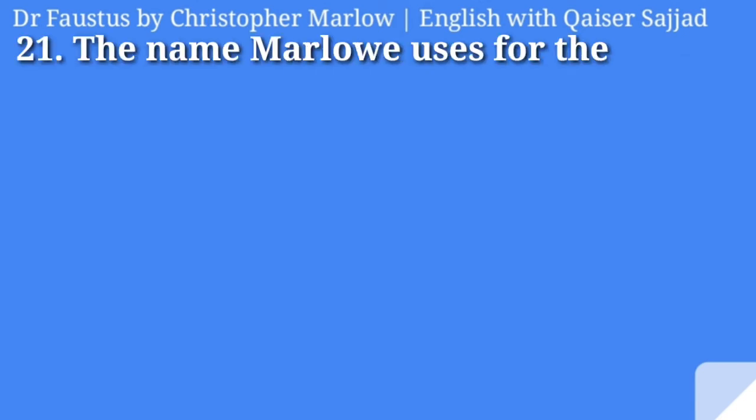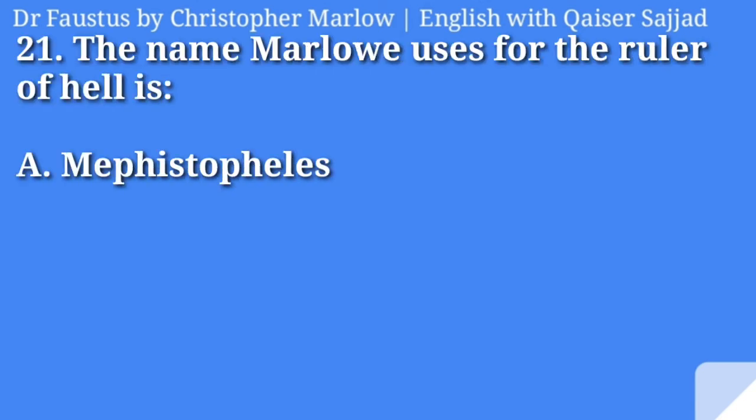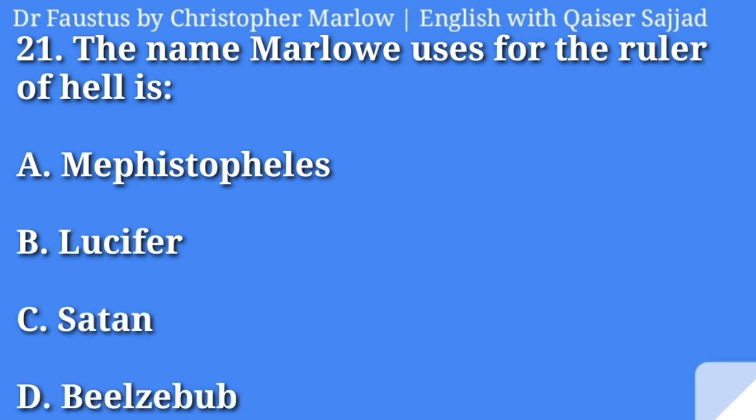The name Marlowe uses for the ruler of hell is: Mephistopheles, Lucifer, Saturn, or Beelzebub? Answer is option B, Lucifer.